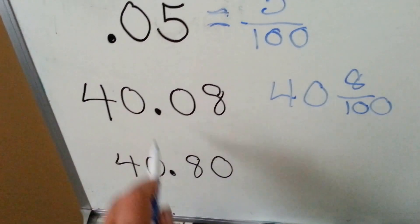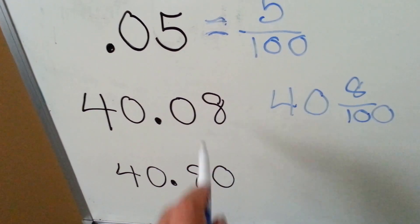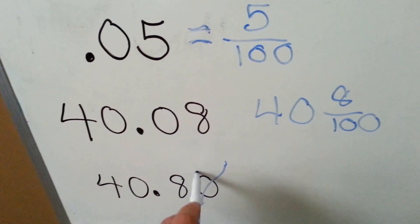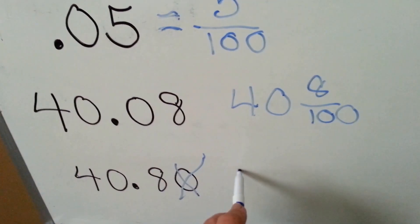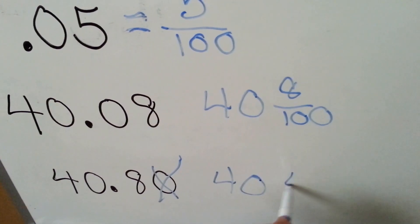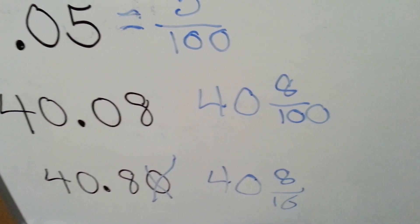In this one, if you look, I reversed the zero and the eight. This is unnecessary. This would be forty and eight tenths.